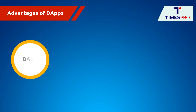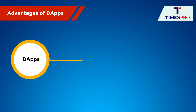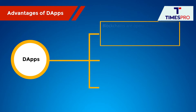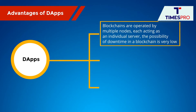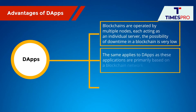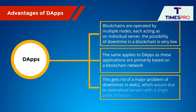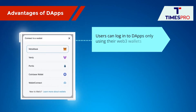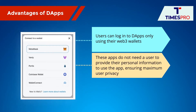You might wonder what else sets D-apps apart from centralized applications. Let us look at some of the advantages that they provide. As we shared in our video on blockchains, because blockchains are operated by multiple nodes each acting as an individual server, the possibility of downtime in a blockchain is very low. The same applies to D-apps as these applications are primarily based on a blockchain network. This gets rid of a major problem of downtimes in Web2, which occurs due to centralized servers with a single point of failure. Moreover, users can log into D-apps only using their Web3 wallets, and these apps do not need a user to provide their personal information to use the app, ensuring maximum user privacy.